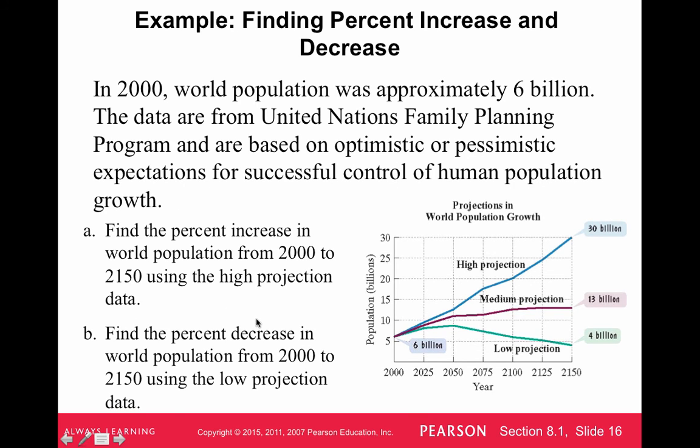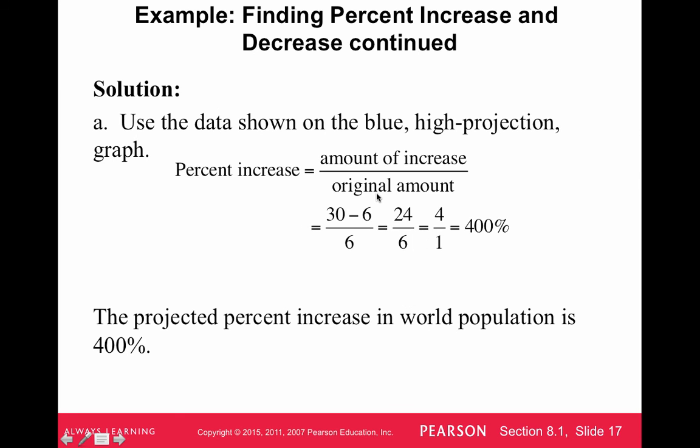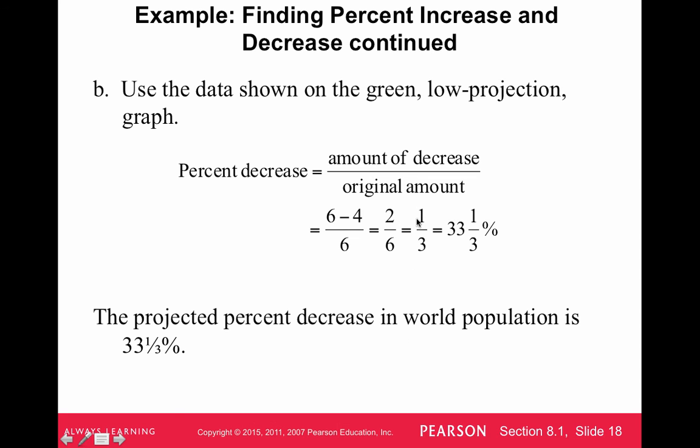What about the decrease if we look at this low projection here? So we start at 6 billion and maybe in 2150 we have 4 billion. So percent decrease, just the same thing. What's the amount of decrease? Well we really should be doing 4 minus 6 to show that it went down to negative 2. But as long as you just basically say there's a decrease at the end, it doesn't really matter what the order of the subtraction is as long as you know it's a decrease. But the original population was 6 billion. So there's a difference of 2 from 4 billion to 6 billion. And so the decrease of 2 divided by 6 is 1 third. Type that in your calculator and multiply it by 100. So 1 divided by 3 times 100 is 33.33%. So 33.33% is the projected decrease in world population.